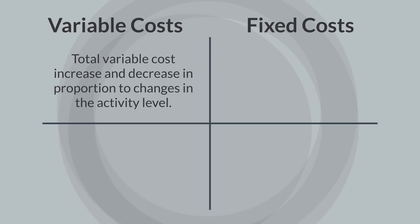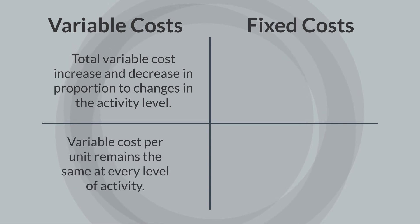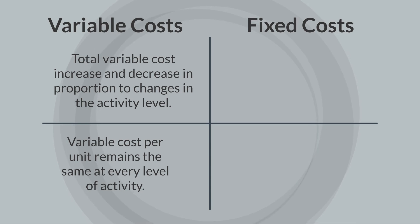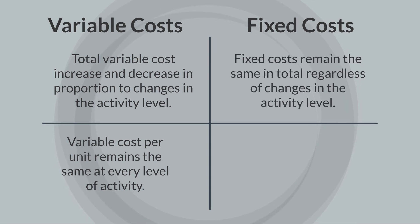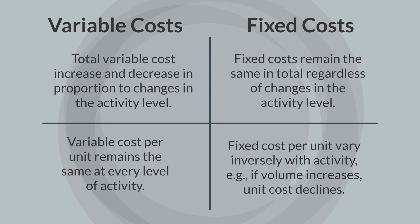Total variable costs increase and decrease in proportion to changes in the activity level, but the variable cost per unit remains the same. Fixed costs remain the same in total regardless of changes in the activity level, but the fixed cost per unit will vary inversely with activity.